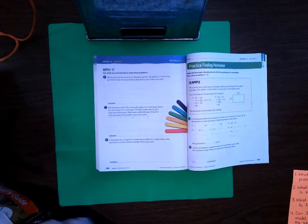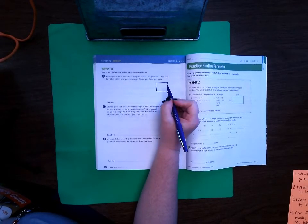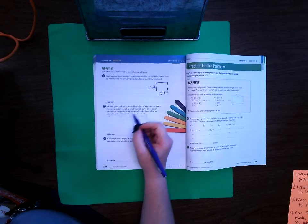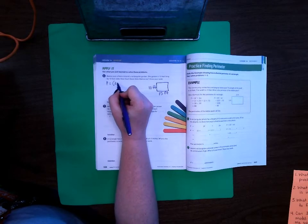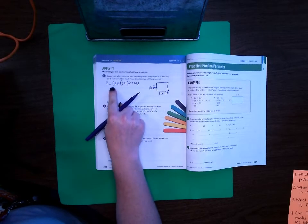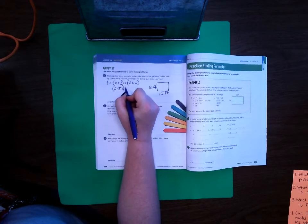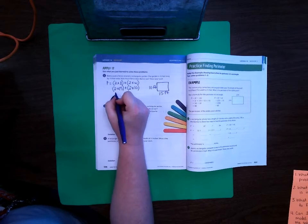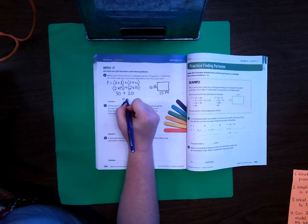When we are doing perimeter it's still always a good idea to go ahead and draw a picture, but I am going to solve this one using one of the formulas. So right here it says that it's 15 feet long and 10 feet wide. So for this one I am going to use the formula where we do perimeter equals 2 times the length plus 2 times the width. So if I do 2 times the length, the length is 15, so 2 times 15 plus 2 times the width and the width is 10. 2 times 15 is 30 plus 2 times 10 is 20. When I add those together I get 50 feet.